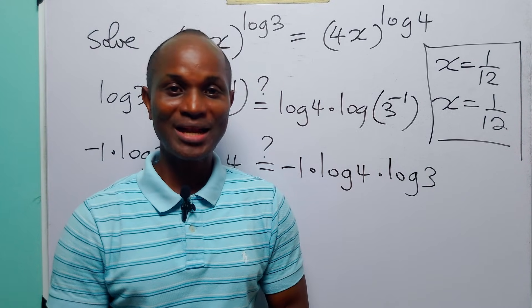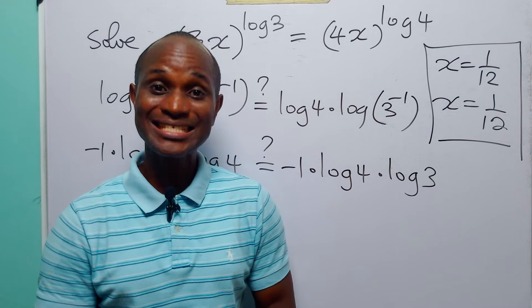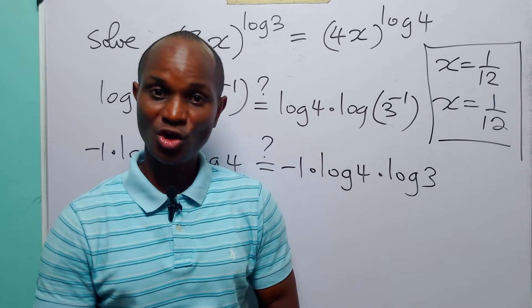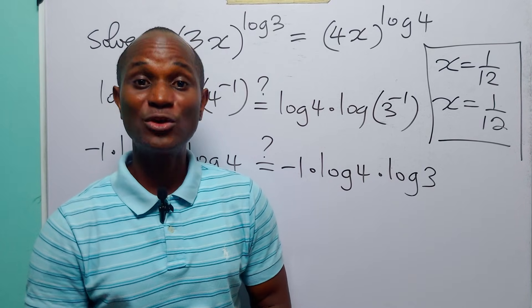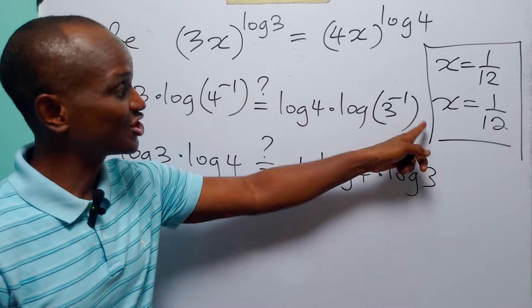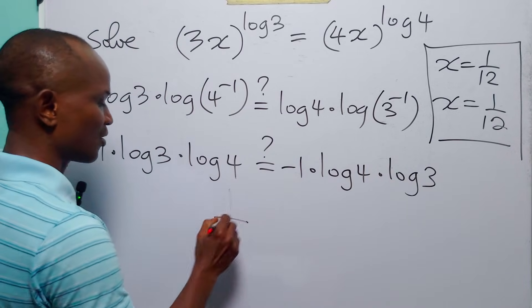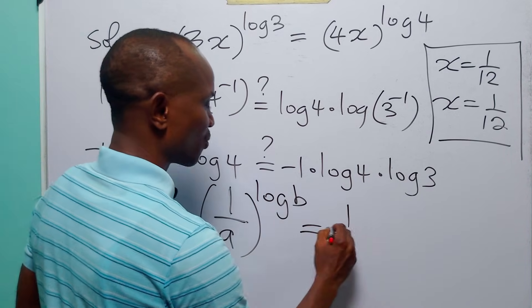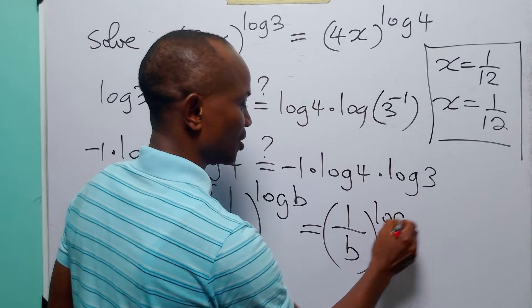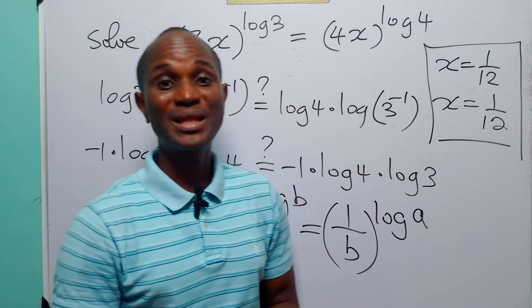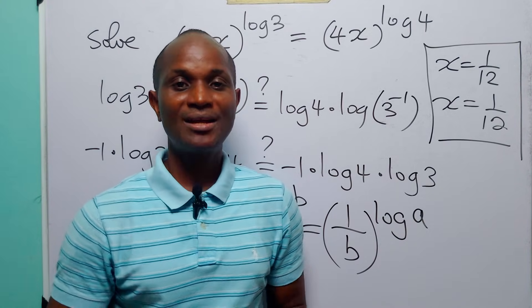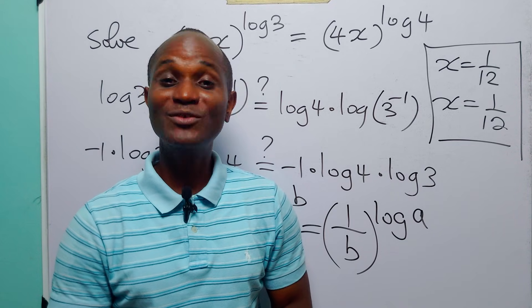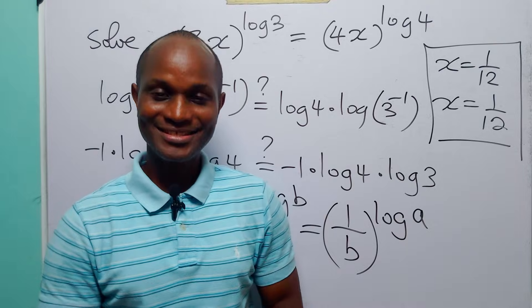Before closing the tutorial, I'd like to reply to a comment seen in several of my videos asking why I do these checks. I do them not because I am unsure of what I solved, but as an exercise in evaluation of logarithmic expressions. For instance, from the check, you may have learned that 1 over a to the power log b equals 1 over b to the power log a. I hope that is a good enough explanation. With that, we come to the end of this tutorial — I hope you learned something new. Please subscribe to the channel, leave a like to support us. Thanks for watching and see you in the next video.